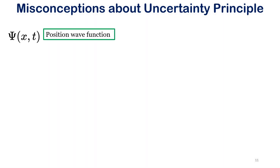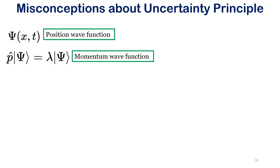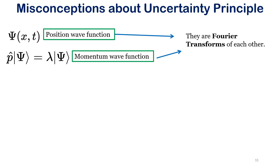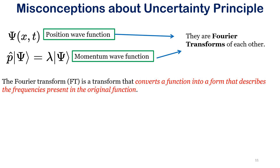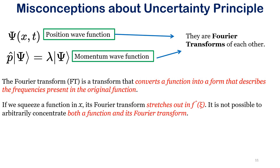There are two important things in quantum mechanics: the position wave function and the momentum wave function. These two are Fourier transforms of each other. The Fourier transform is a transform that converts a function into a form that describes the frequencies present in the original function. If we take a function, its Fourier transform stretches out, and it is not possible to arbitrarily concentrate both a function and its Fourier transform.